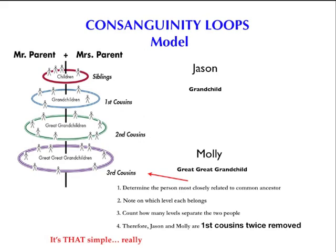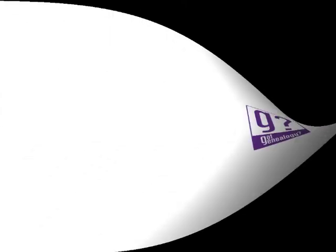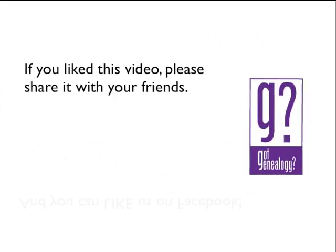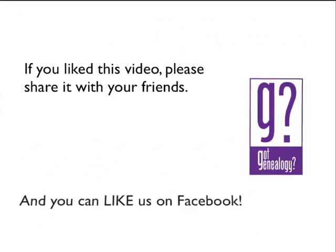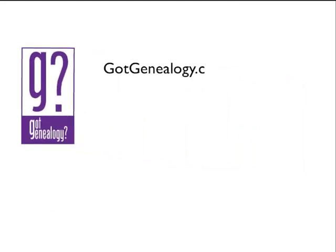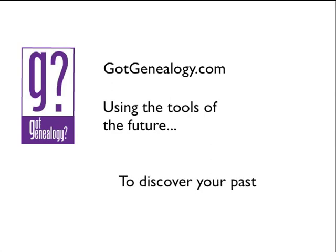Well, I hope the Consanguinity Loops model will help make it easier for you to understand, so you can deal with your annoying cousin Virginia, who insists that your first cousin's child is your second cousin. Well, good luck with that. If you enjoyed this video, and we hope you did, please share it with your friends, and you can also like us on Facebook. GotGenealogy.com — using the tools of the future to discover your past.